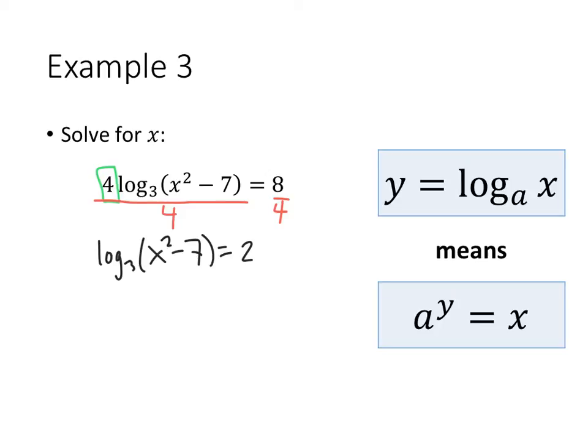So the 3 is the a, the x squared minus 7, that's my x, and the 2 is the y. So when I rewrite this, I get 3 to the 2 equals x squared minus 7.